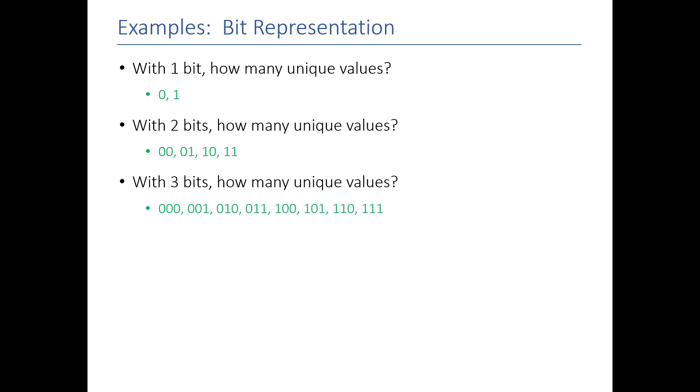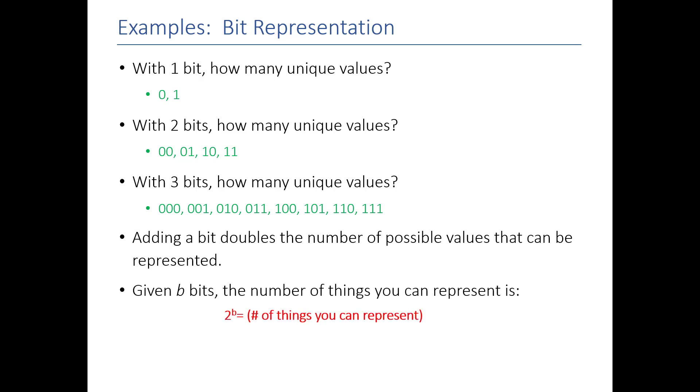So, I hope you're noticing a pattern. Every time I add a bit, I'm basically doubling the number of unique values that I can generate. And we can actually formalize this with math. That given b bits, the number of things I can represent is 2 to the b.